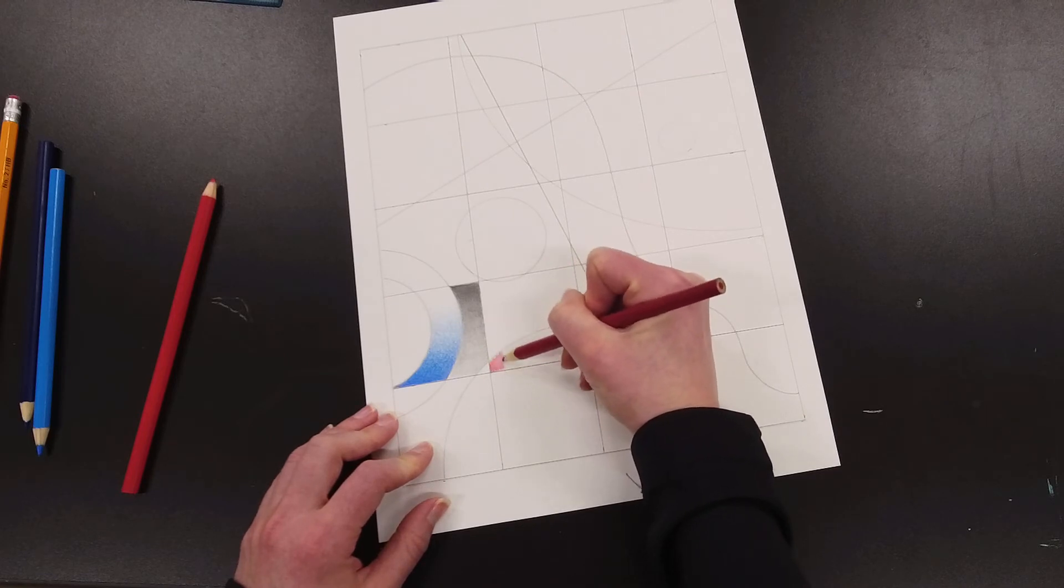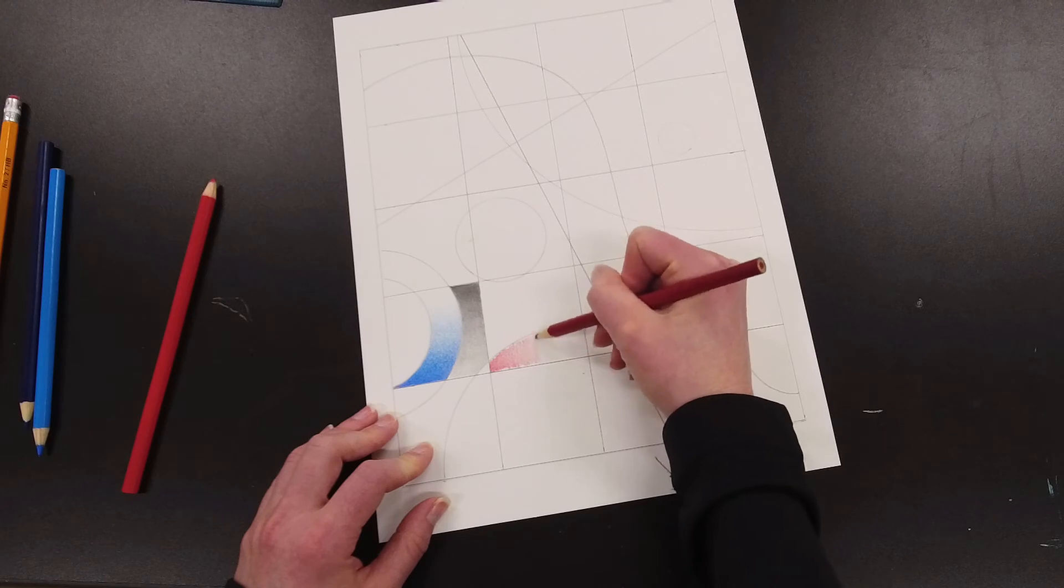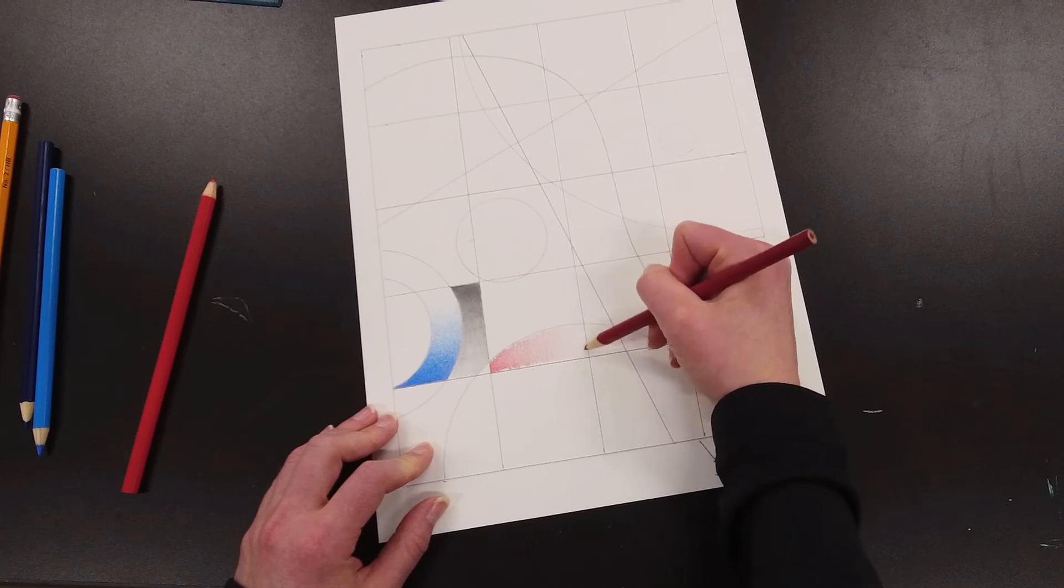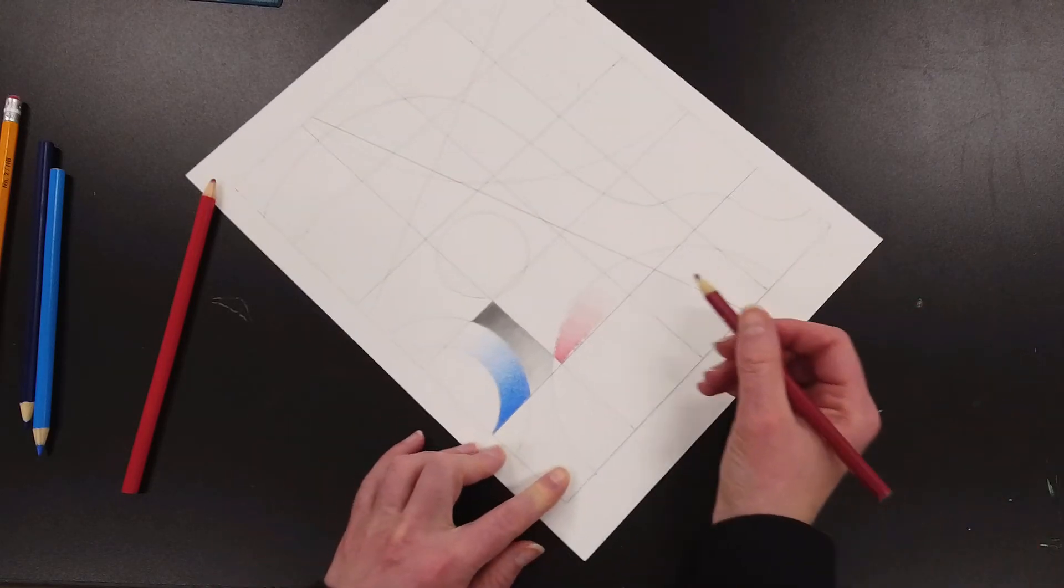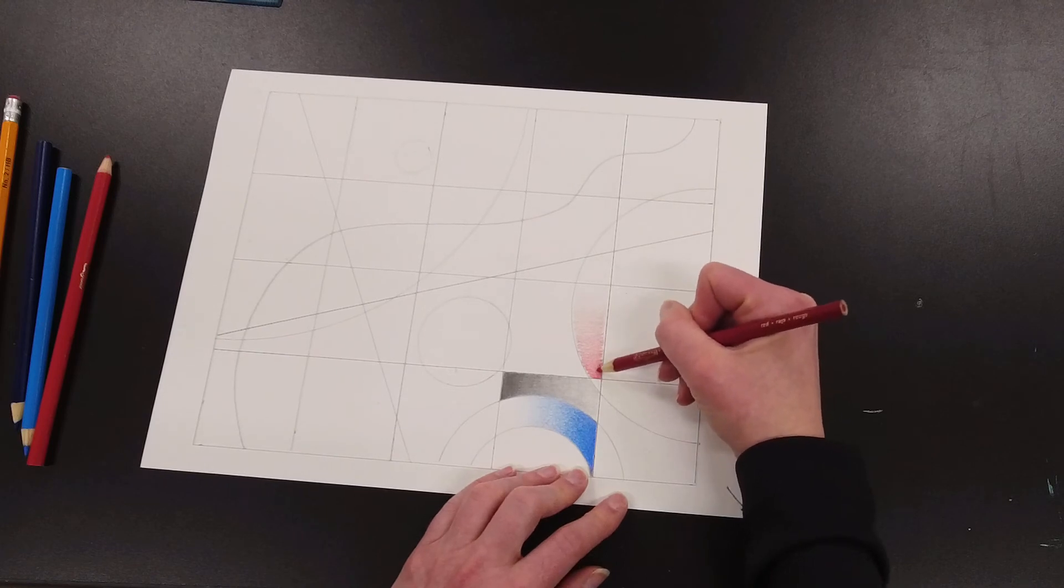So I'm going to start with the red, I'm going to move across that space, pressing down less and less as I move across, being careful to stay within my shape, until I'm barely pressing down at all.